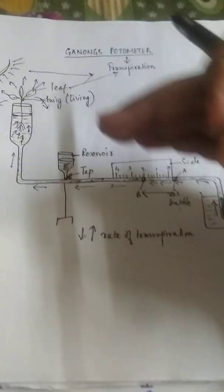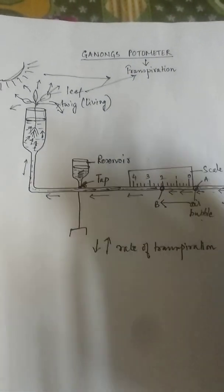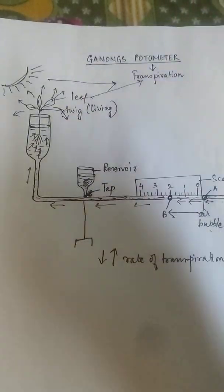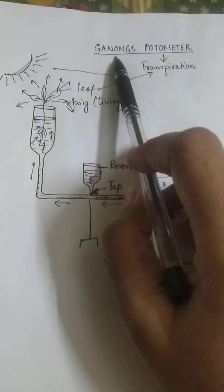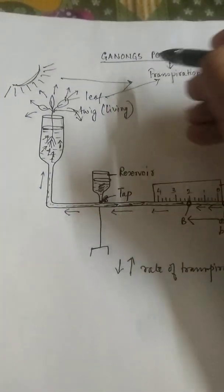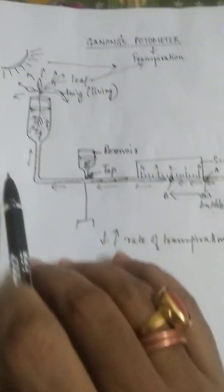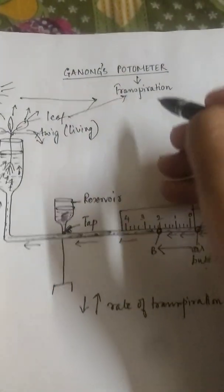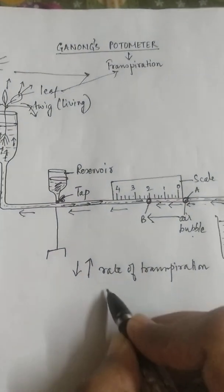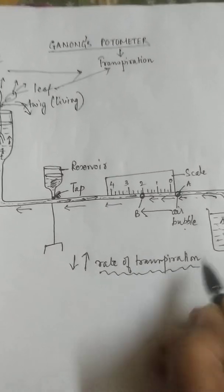So this is what has happened in Ganong's potometer. So Ganong's potometer is an equipment which was discovered by Ganong and hence the name Ganong's potometer. And this is a glass equipment and its work is to measure the rate of transpiration of a particular plant.